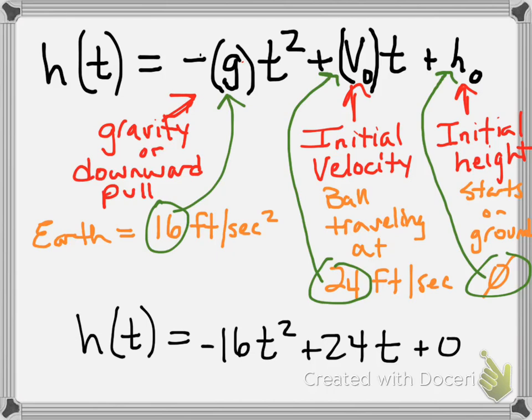Now I don't need to have the plus zero because it won't affect my problem, so I'm going to erase it. So for this particular situation I've given you, H of T would be negative 16 T squared plus 24 T. So this is the height with respect to time for an object on Earth with an initial velocity of 24 feet per second.